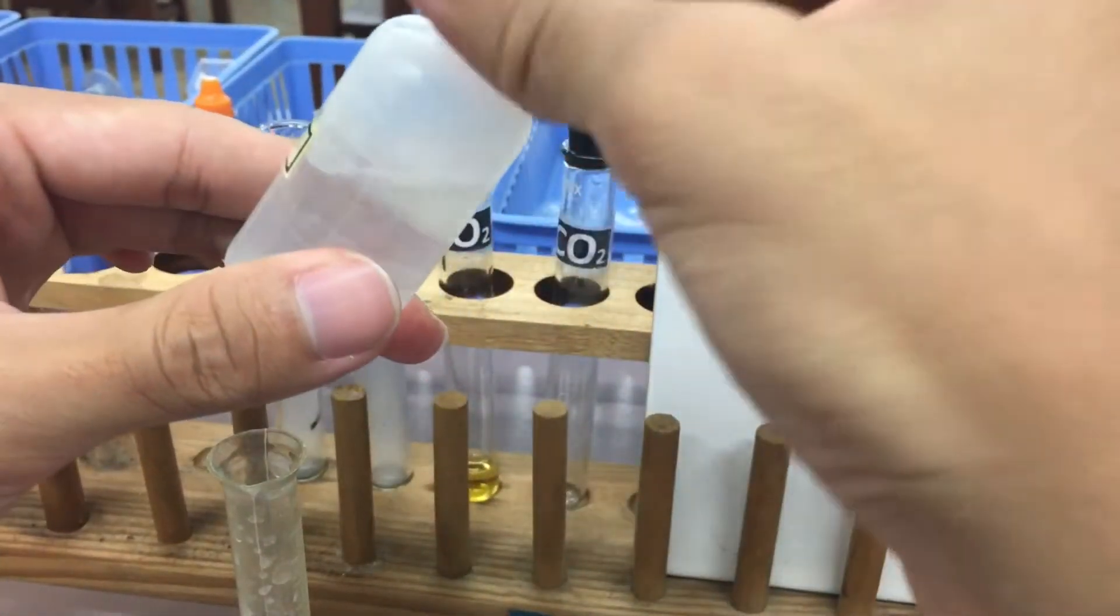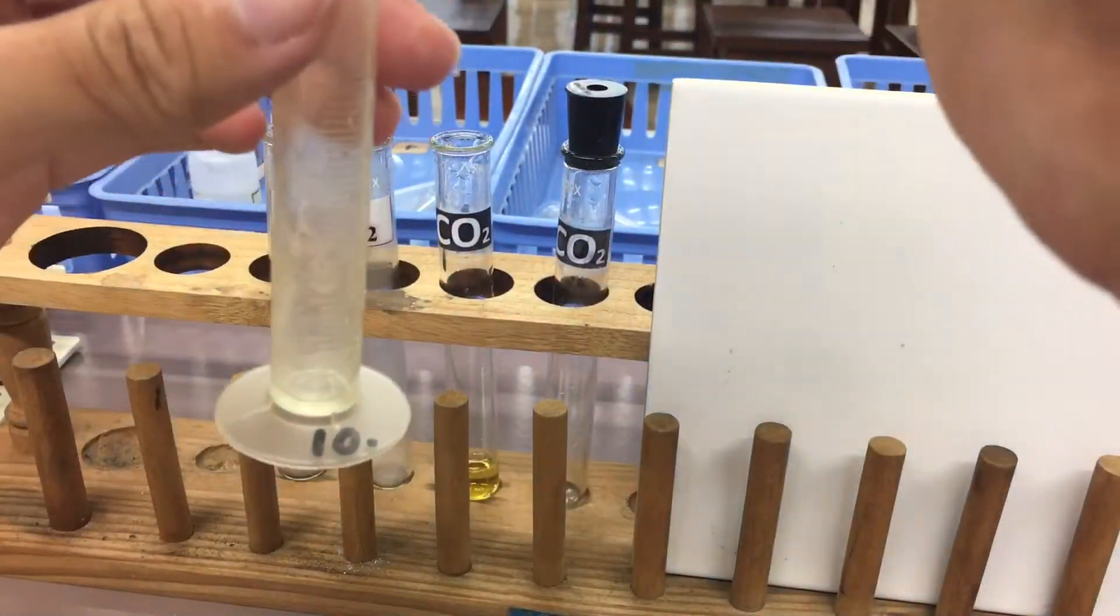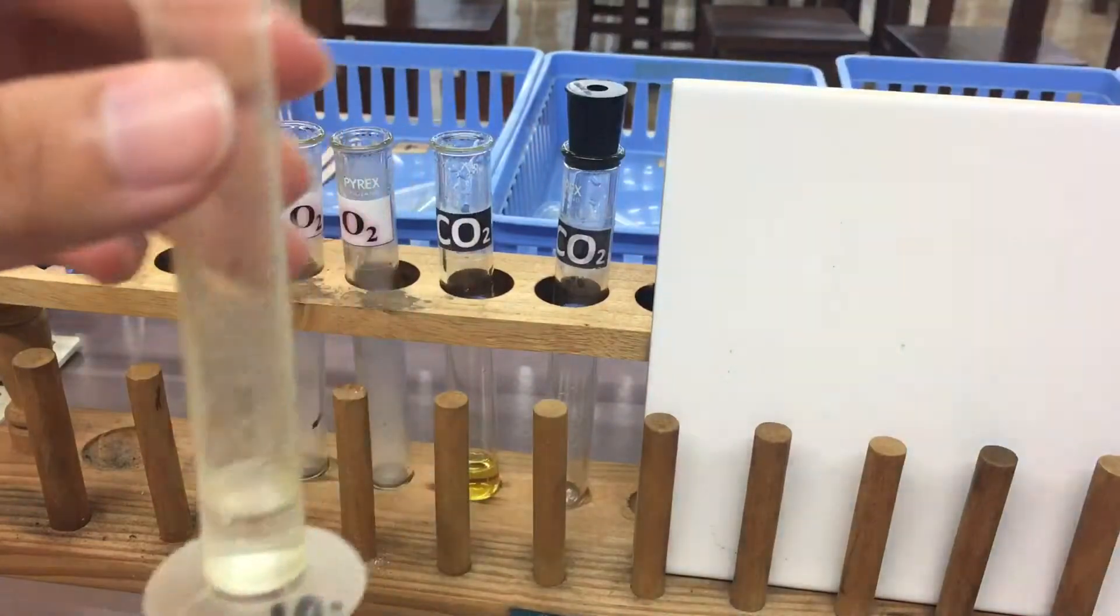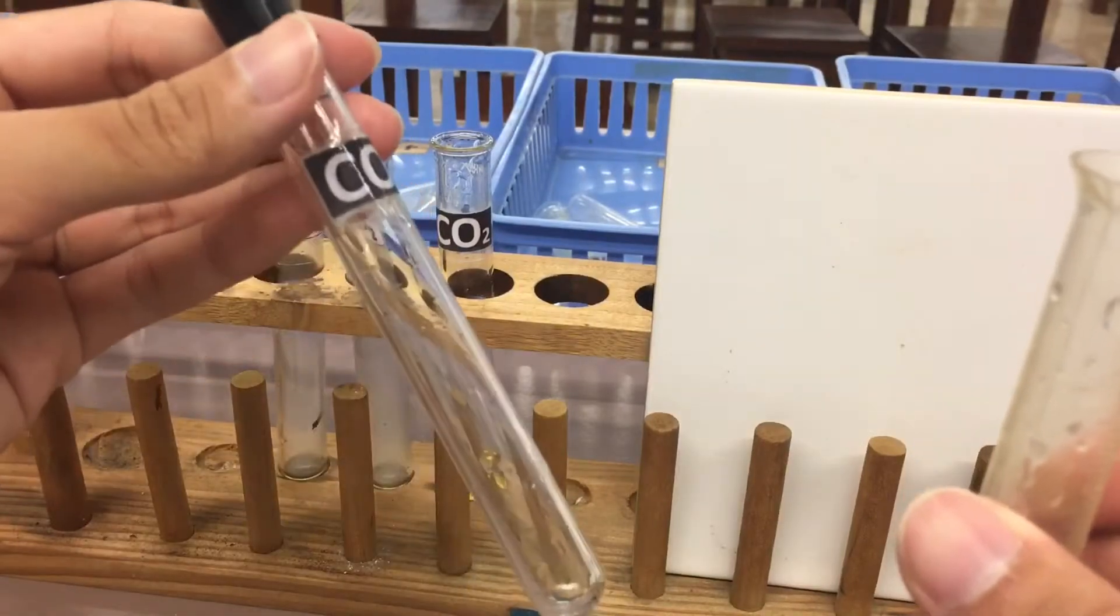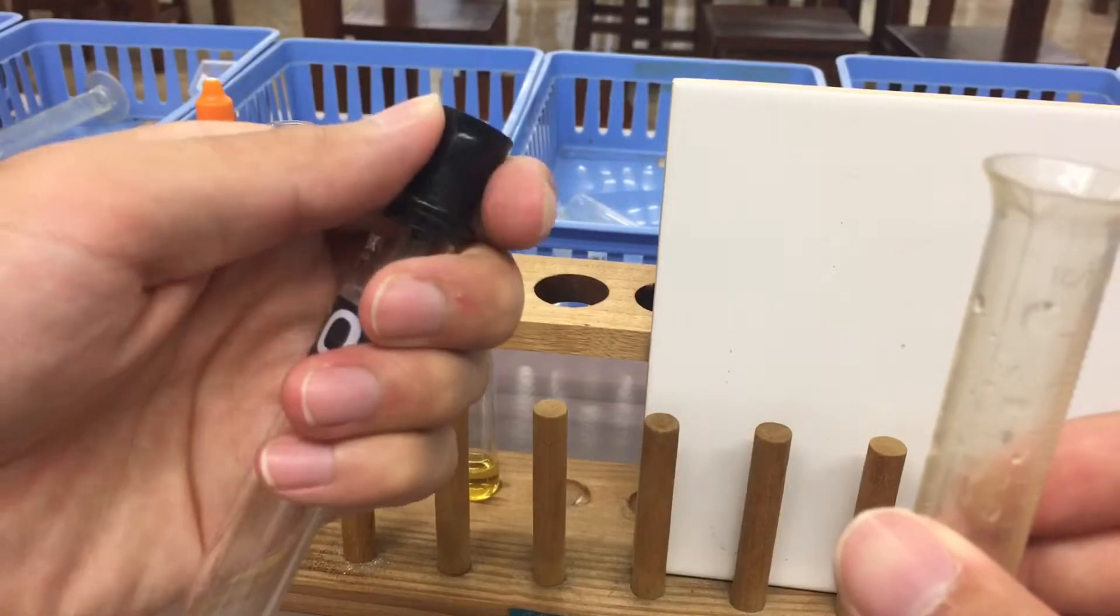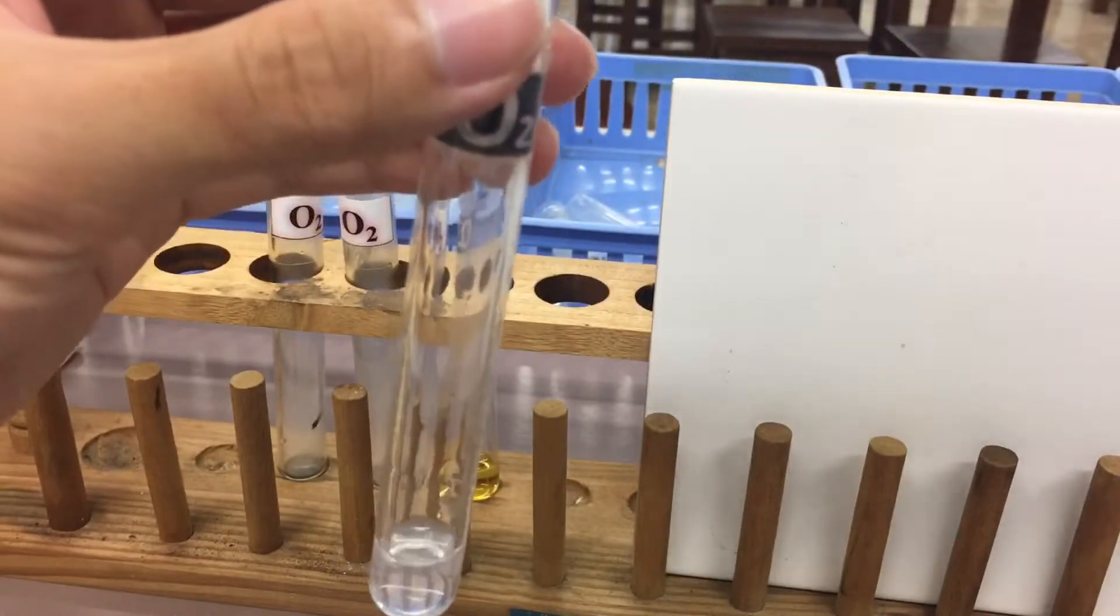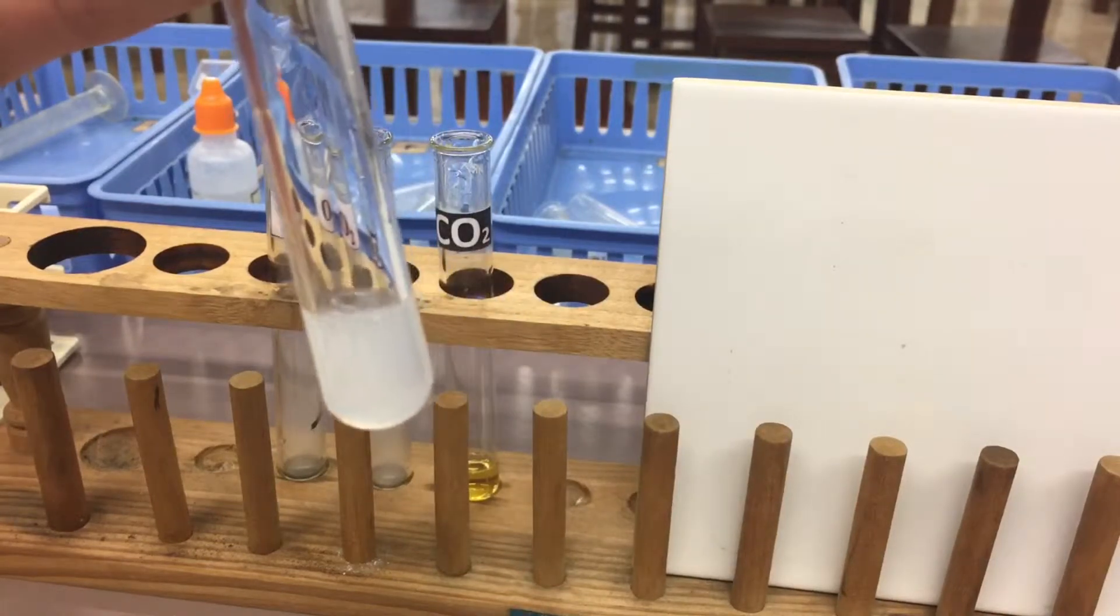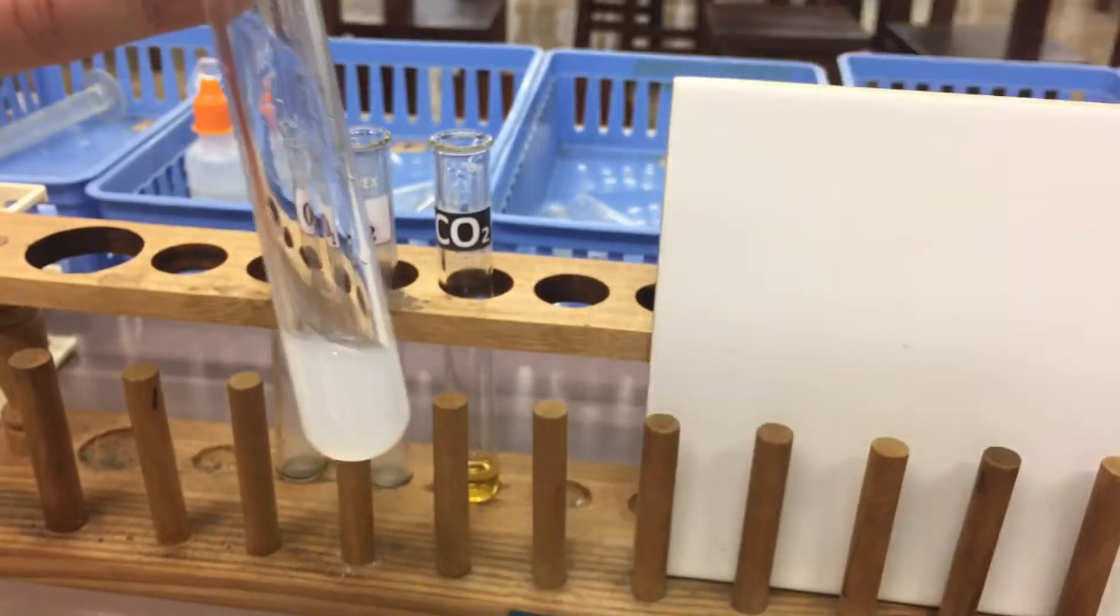Lime water is colorless. We just use a little amount, just like 5 cm cubed. We use the measuring cylinder to measure the volume. This is carbon dioxide. After we remove the stopper, pour it into it as soon as possible. So it will become milky, from colorless to milky. This is the kind of change.